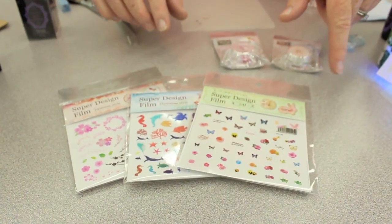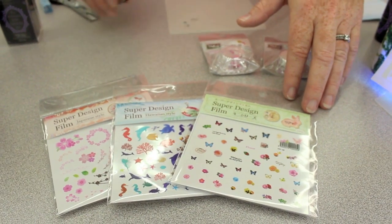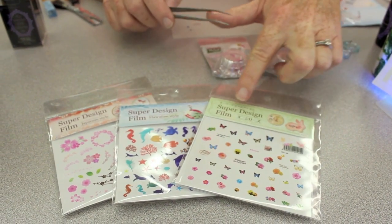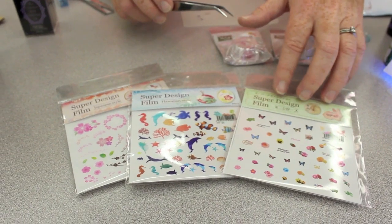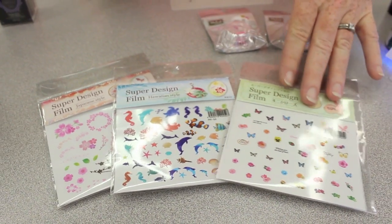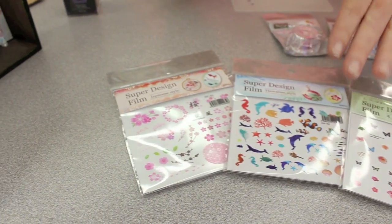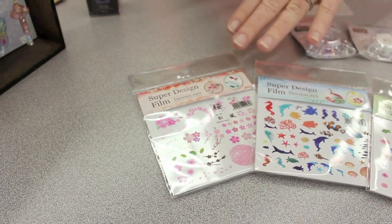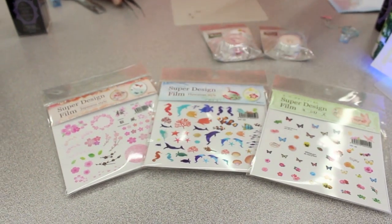Okay. While that is baking in the lamp, I'm going to talk about some of the super design film that we carry and they come in, they have sheets of lots of different motifs. We have butterflies here. We have Hawaiian theme. We have sea theme. Some Japanese, the cherry blossoms. Many, many more. We've got initials. But these are really cool.